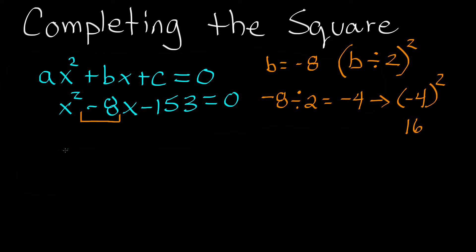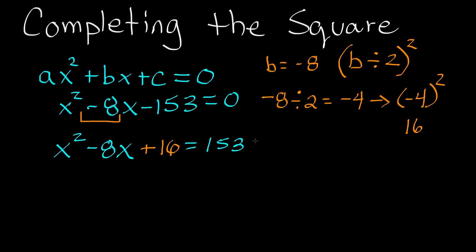Now we rewrite x squared minus 8x and add that sixteen — the squared term — to the left hand side. This is why it is called completing the square. We keep all of this on the left hand side. We currently have negative 153 on the left hand side, so we move that to the right hand side by adding 153 to both sides, giving us 153 on the right. But since we added 16 to the left hand side, we must also add 16 to the right hand side to balance the equation.